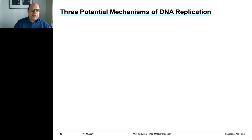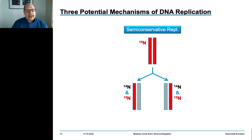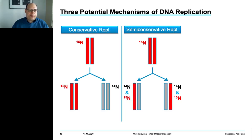The debate was among three different mechanisms. The first, called semi-conservative replication — proposed by Watson and Crick — involves dividing the double-stranded molecule into two parental strands, which serve as templates for new complementary daughter strands. Other scientists believed the newly formed DNA must be a full copy of the original double-stranded molecule (conservative replication).